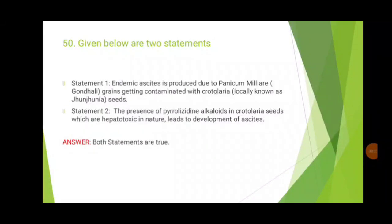Two statements are given to evaluate as true or false. Statement one: endemic ascitis is produced due to panic familiar grains getting contaminated with Crotalaria. Statement two: the presence of pyrrolizidine alkaloids in Crotalaria seeds, which are hepatotoxic in nature, leads to development of ascitis. Both statements are true.